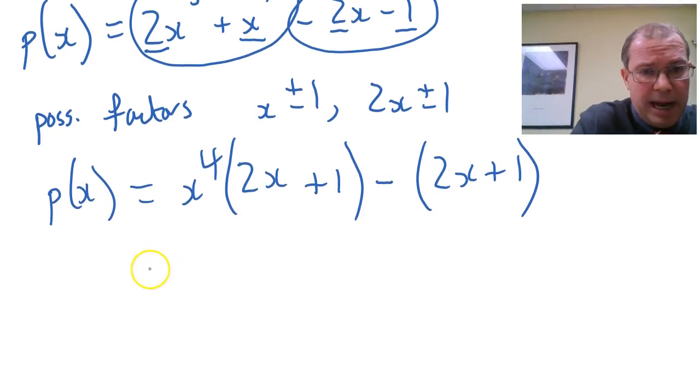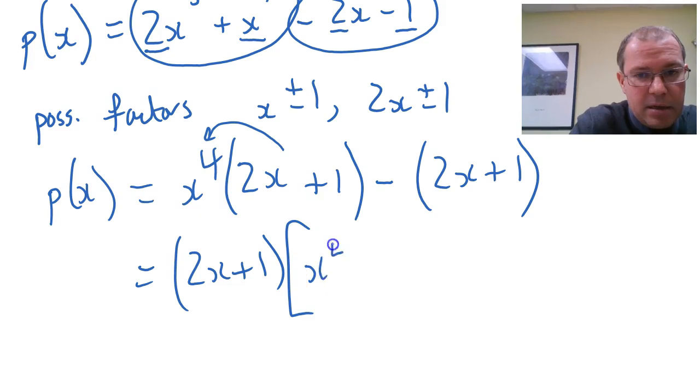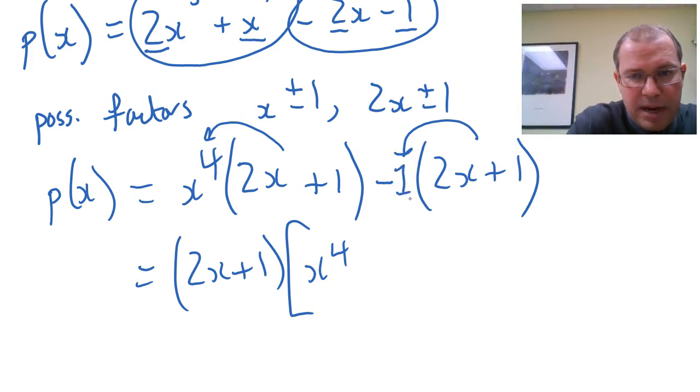So now I can factor out the 2x plus 1. So how many 2x plus 1s do I have? Well, I've got x to the power 4 of them here. How many 2x plus 1s do I have here? I've got a minus 1 of them. You don't normally write the minus 1 in there, but there it is.